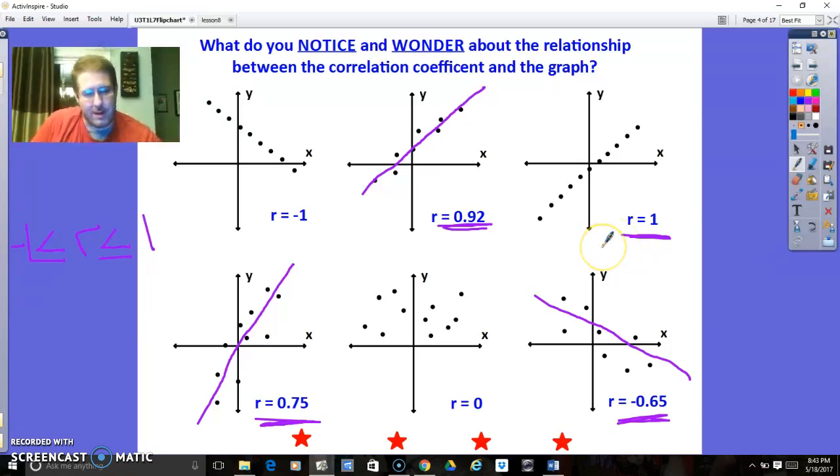This one's a little bit stronger than this one, and I know that because 0.75 is closer to 1 than 0.65. Now, it doesn't matter if it's positive or negative because positive or negative just depends whether or not it's going up or down. And that just depends on what the data is talking about. So whether it's going up or down does not matter when you're talking about weak and strong.